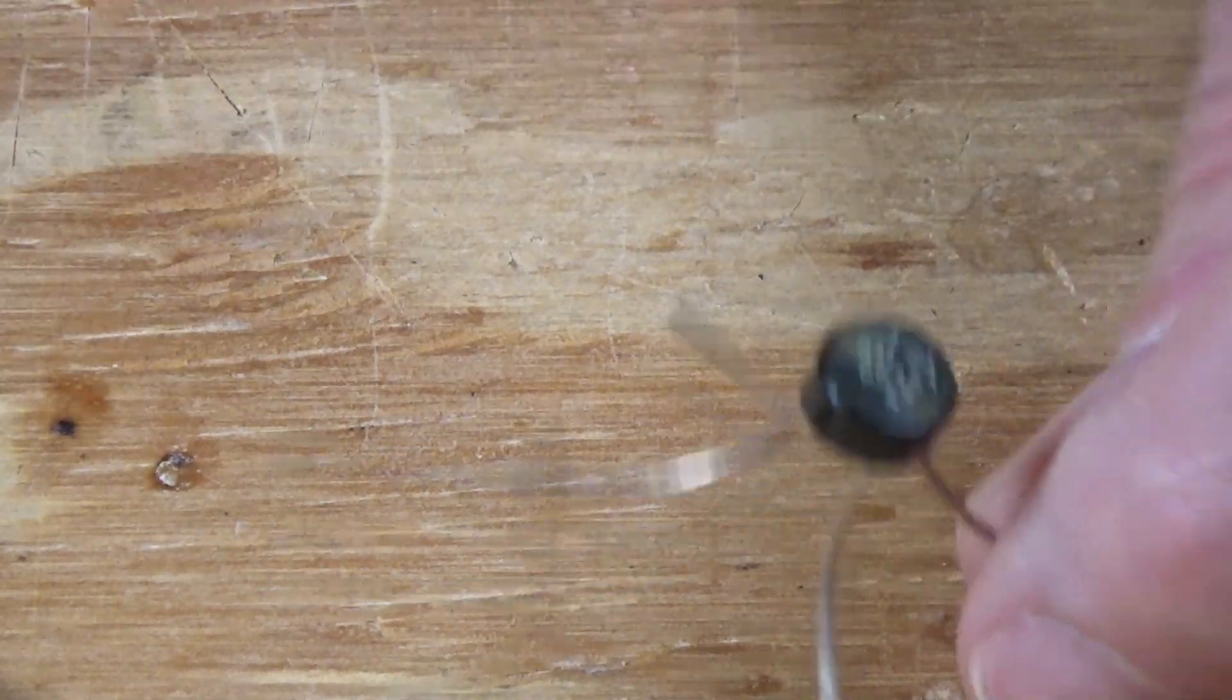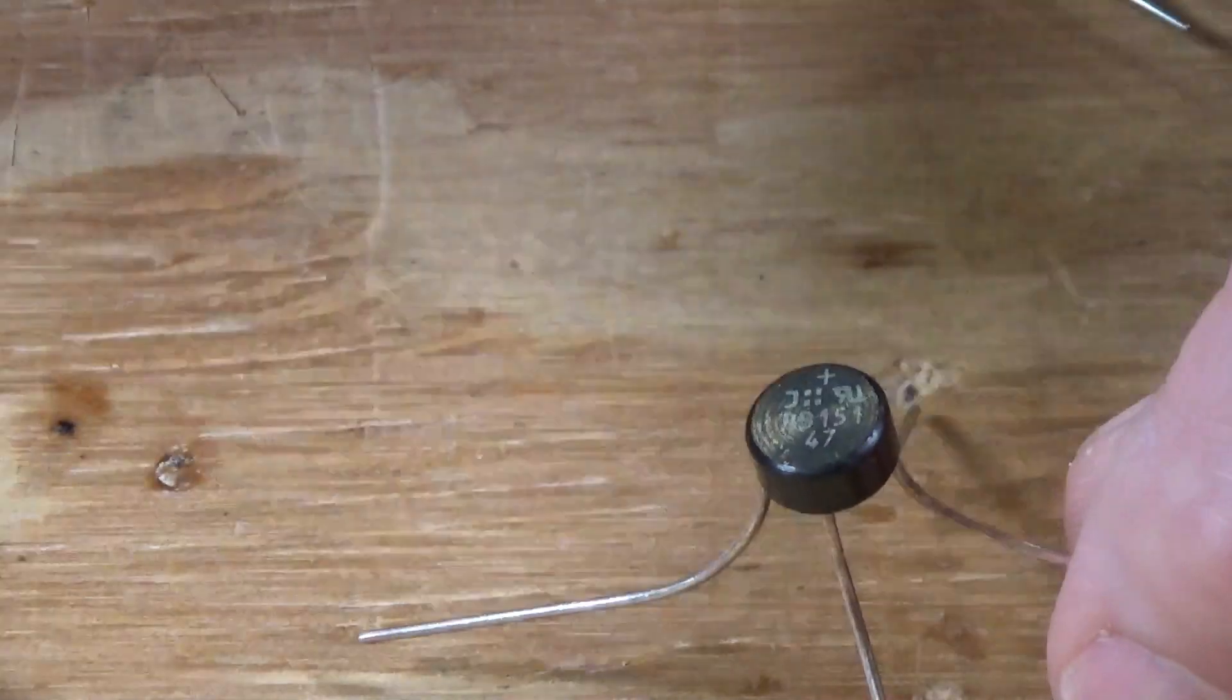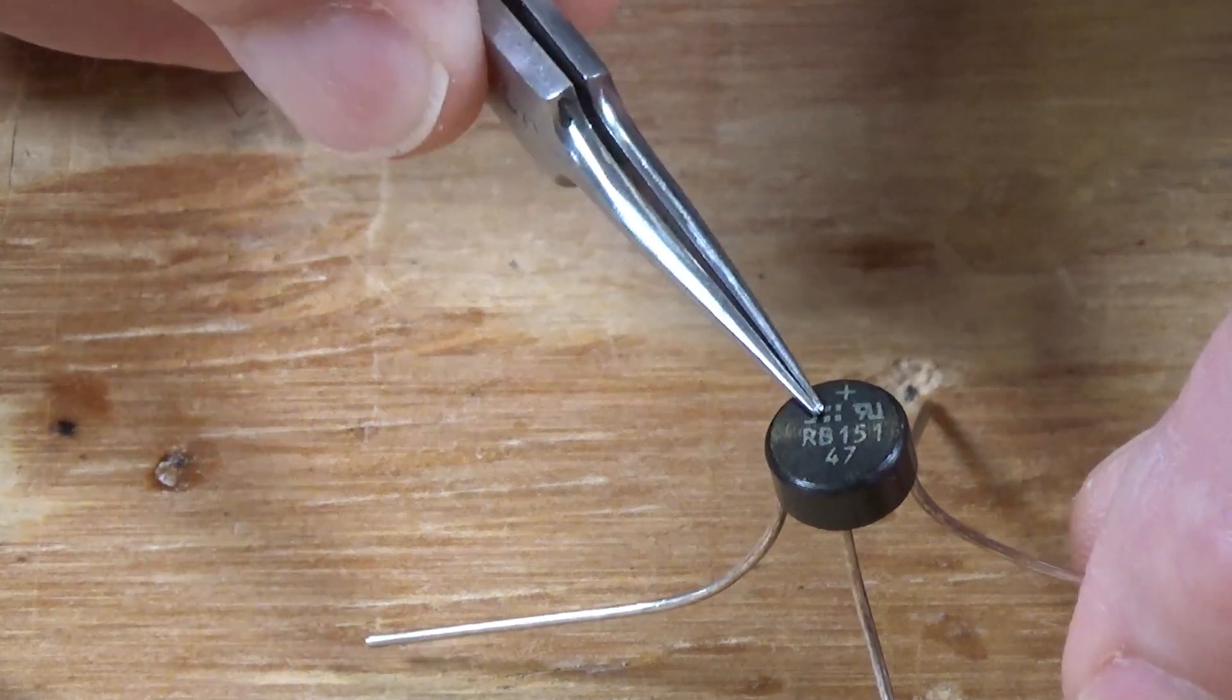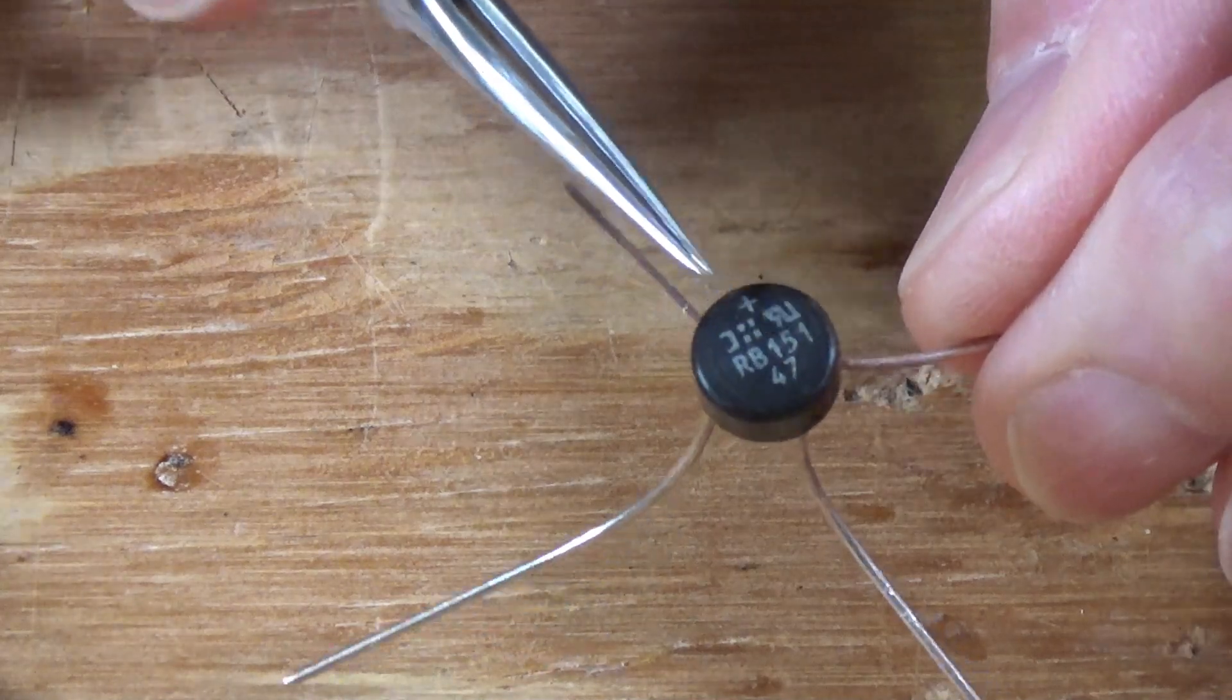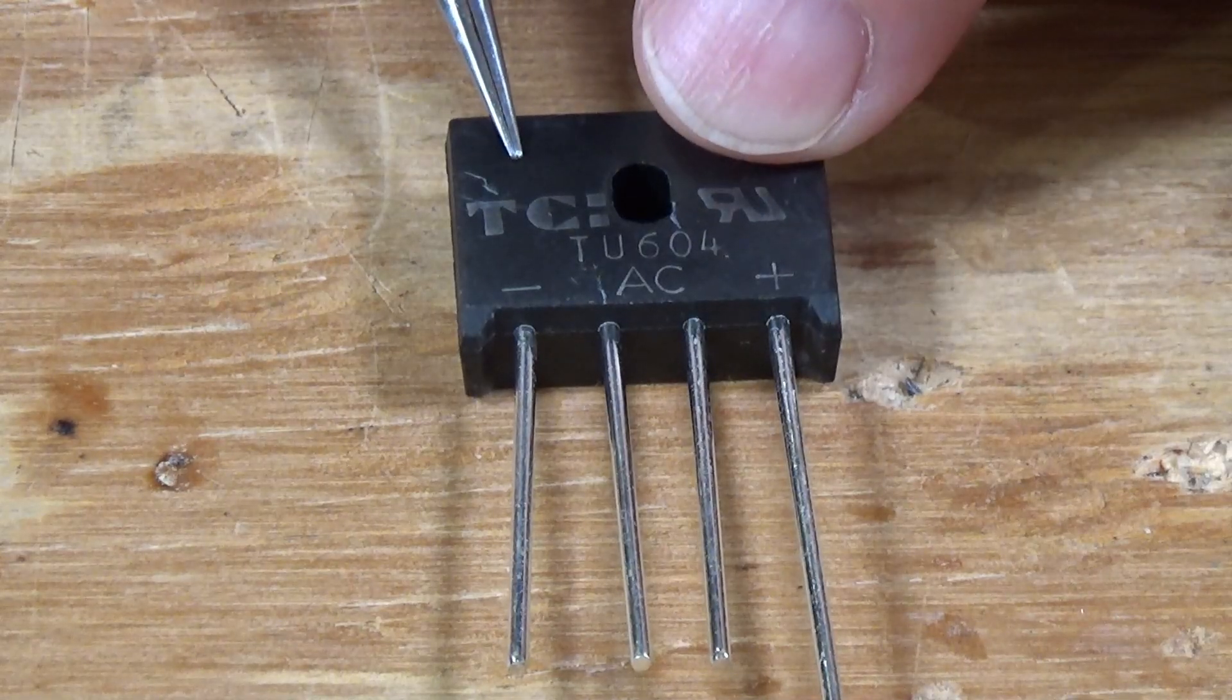Now a bridge rectifier varies. This is a small round one. It's rated at somewhere, I can't remember, one to one and a half amps, and probably about 50 volts, something in that round. This one here is much bigger.